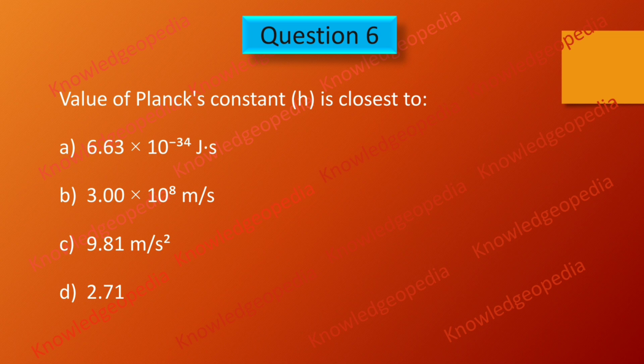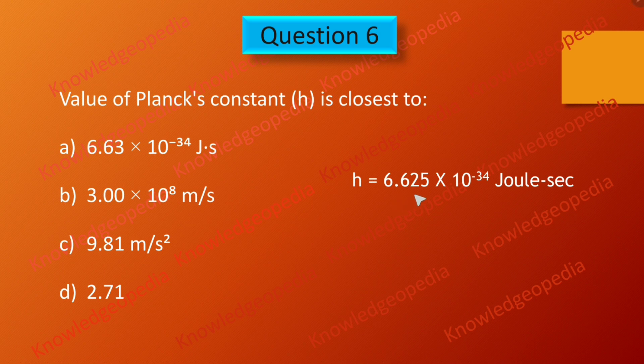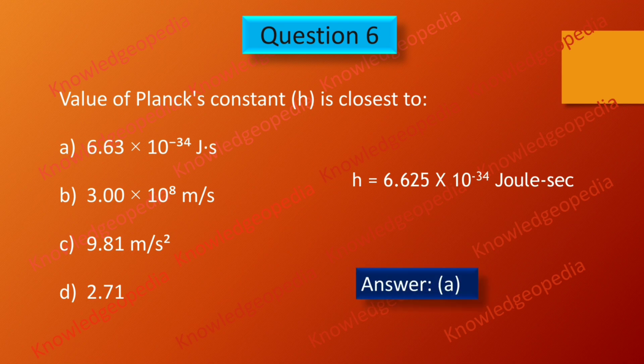As discussed in the lecture series, H is a constant and its value is given as 6.625 times 10 to the power minus 34 joule second. So this value is closest to the value given in option A, thus our correct answer is option A.